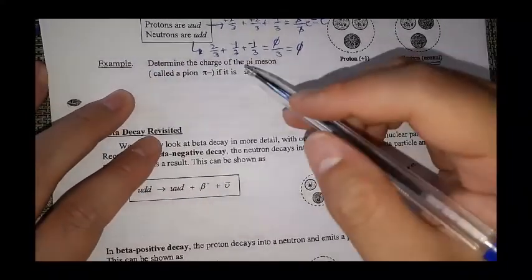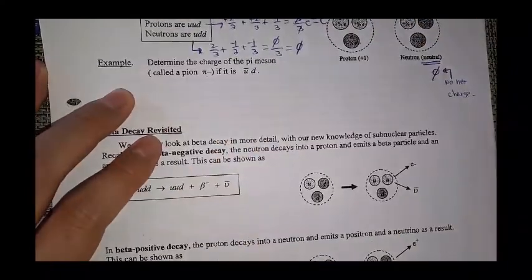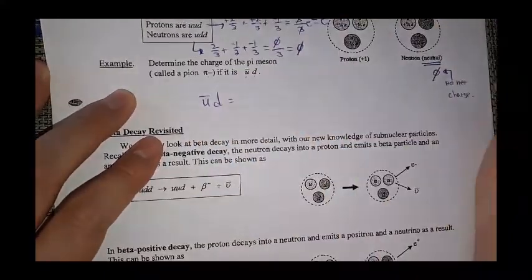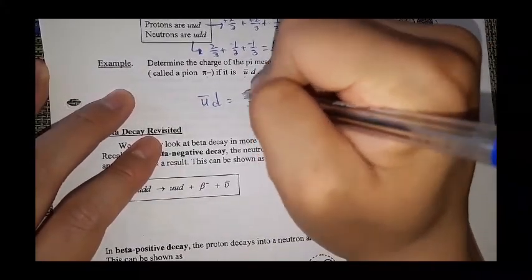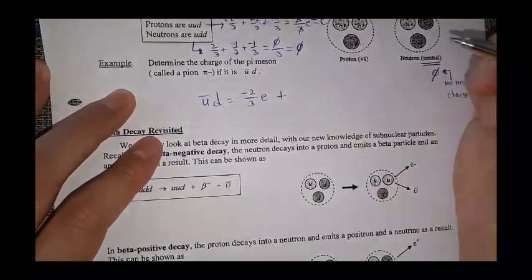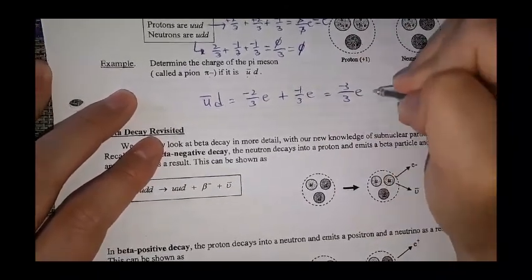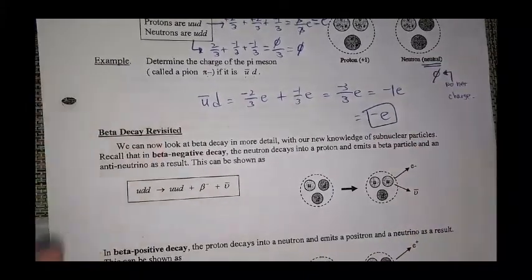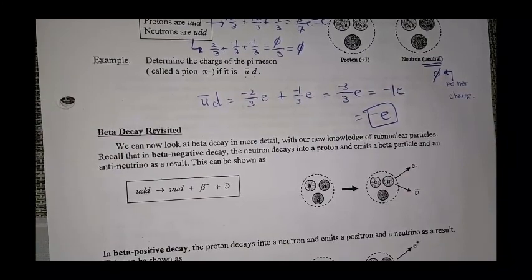Let's do a quick example. Determine the charge of pi meson, and that's pi with the pi symbol. And it says it's composed of anti-up and D. So anti-U D means basically up was positive 2/3, which means opposite charge, negative 2/3 e plus down is negative 1/3 e. So you have negative 3/3 e which simplifies as negative 1e or negative e. So that means pi meson has completely identical charge property as an electron. That's basically what you can think about.